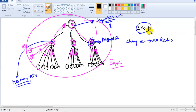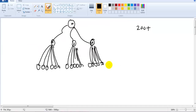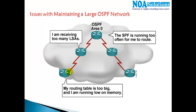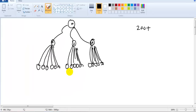These are the general problems OSPF faces in large networks: routers receive too many LSAs, the core router's SPF algorithm runs too many times, and access-level routers don't have enough memory to maintain such large database or routing tables. We need a solution to fix this, and the solution is the concept of OSPF areas.